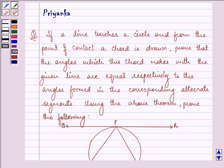Hello and how are you all today? The question says, if a line touches a circle and from the point of contact a chord is drawn, prove that the angles which the chord makes with the given line are equal respectively to the angles formed in the corresponding alternate segment.